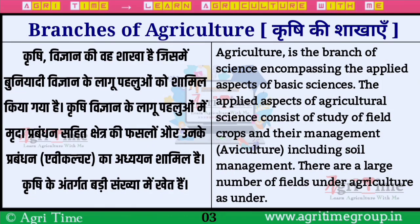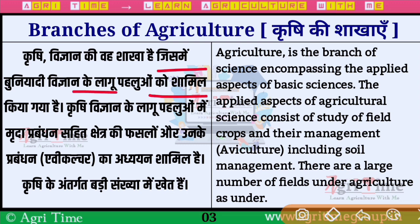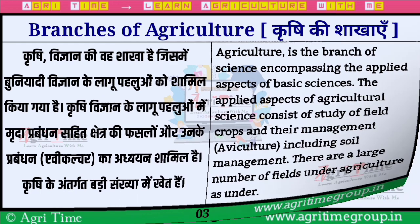बात करते हैं branches की — Krishi की साखाएं, जो कि बहुत ही important हैं। तो friends, Krishi विज्ञान की वह साखा है — Agriculture is the branch of science — जिसमें बुनियादी विज्ञान के लागू पहलुओं को शामिल किया गया है। Krishi विज्ञान के लागू पहलुओं में मृदा प्रबंधन सहित क्षेत्र की फसल और उनके प्रबंधन एवं culture का अध्ययन शामिल होता है।